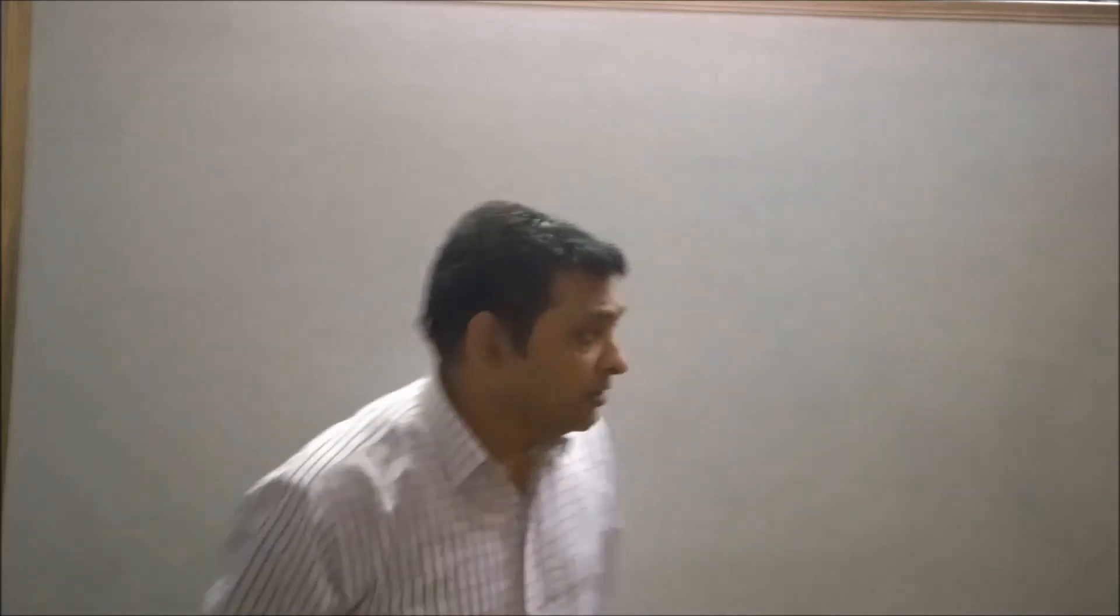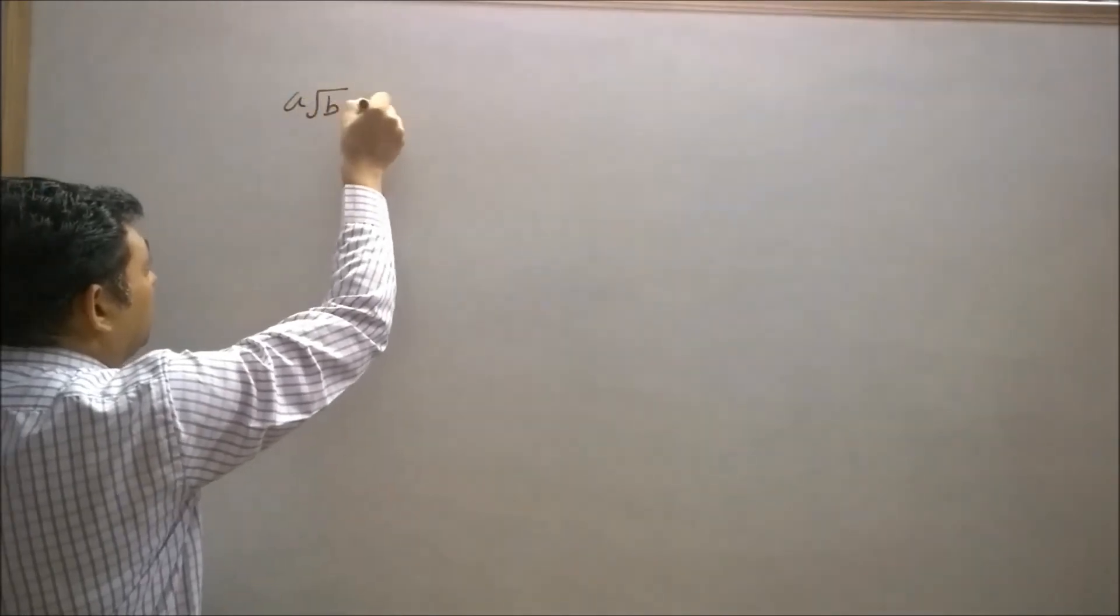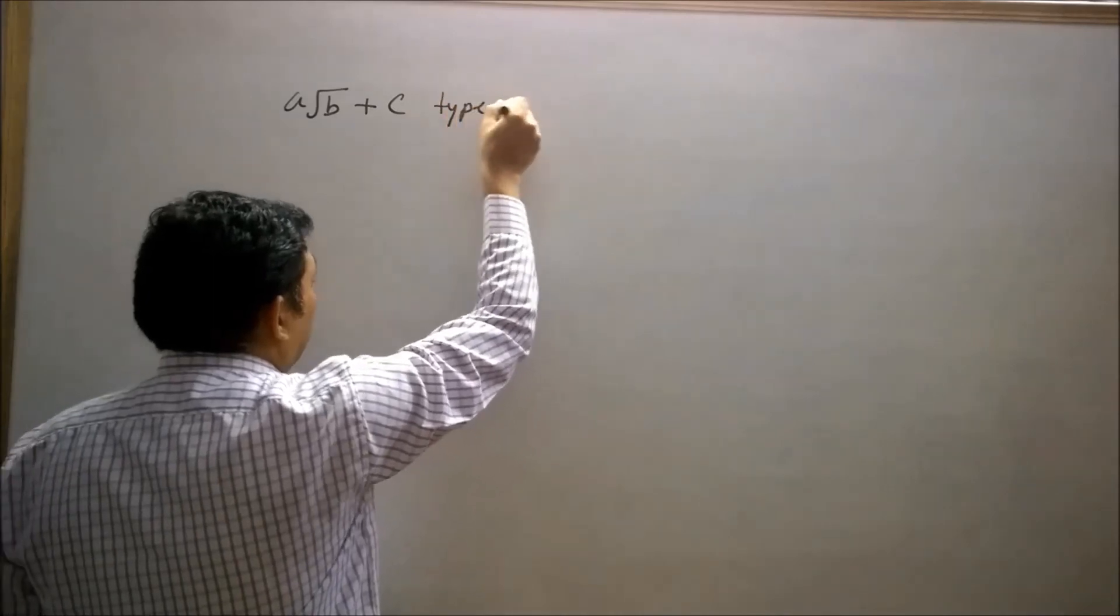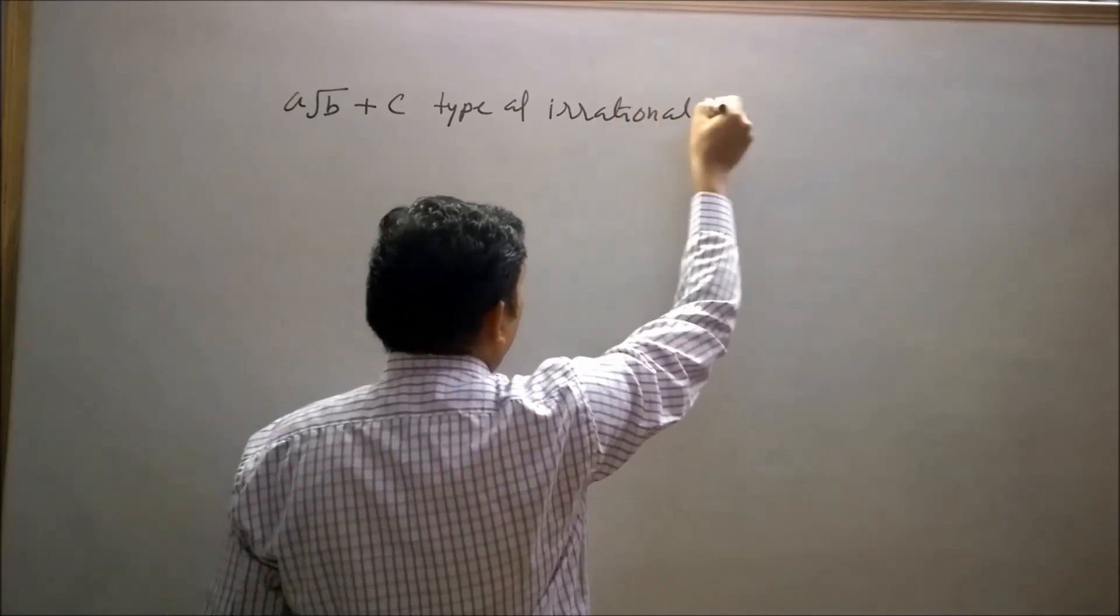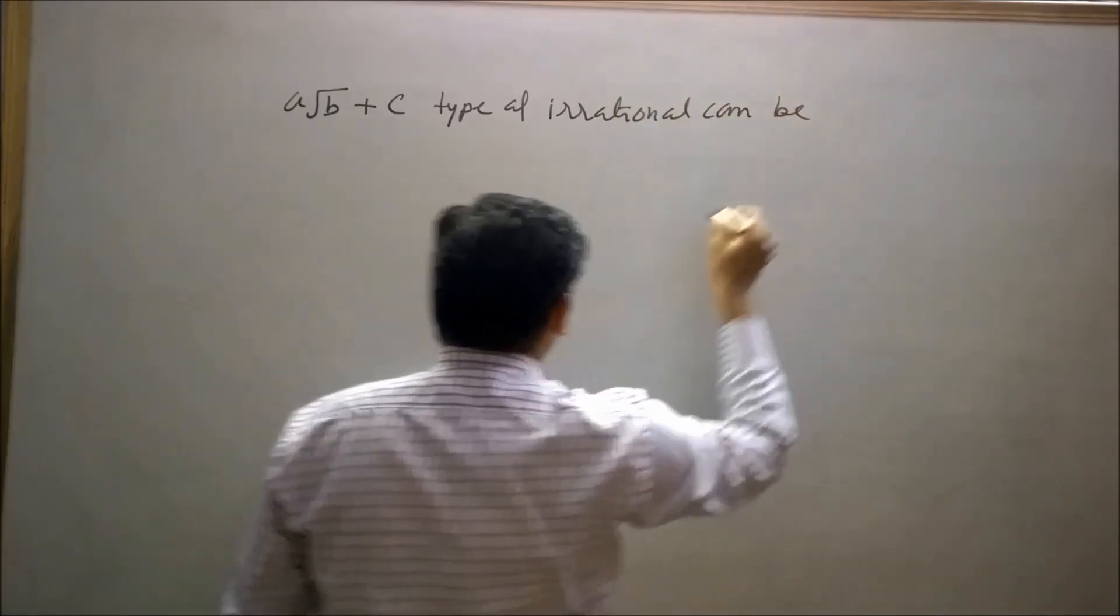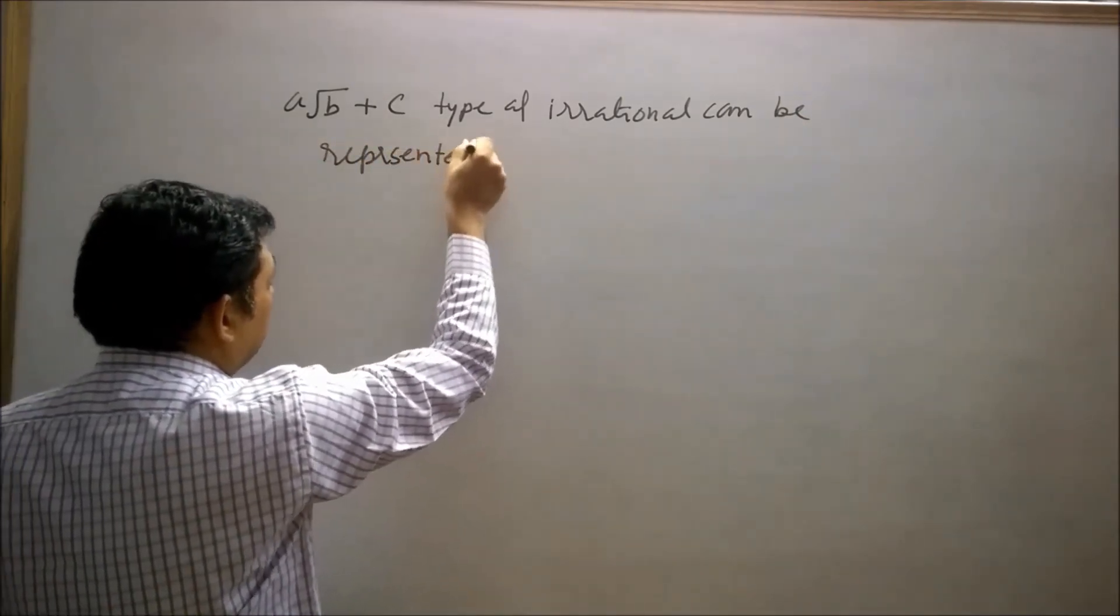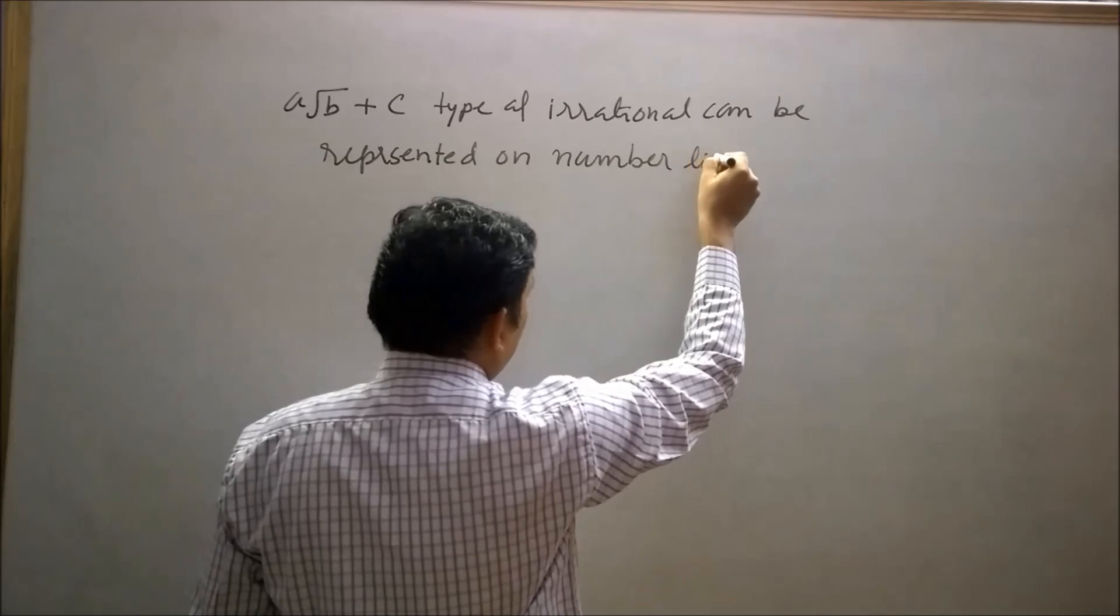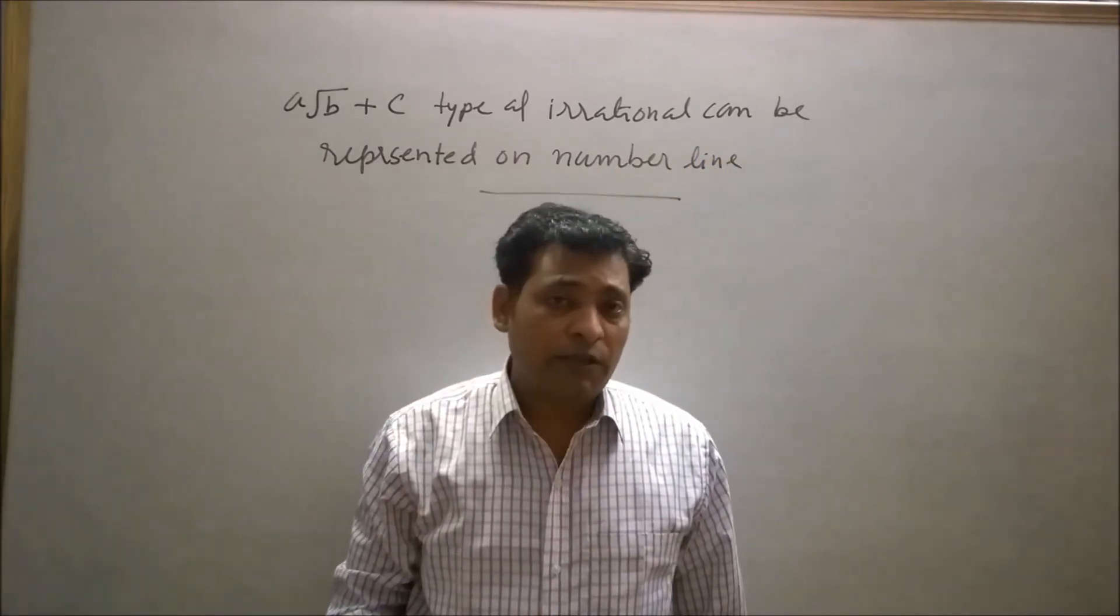So students, with the help of geometrical representation of 2√5 + 1/2, we can represent irrational numbers which are in the form of A√B + C type. Such irrational numbers can be represented on the number line. So students, keep watching my videos and keep practicing. Thank you.